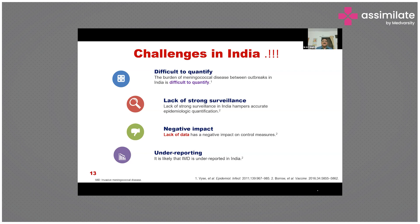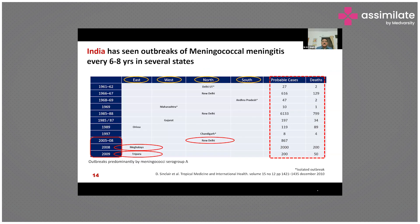As a consequence, IMD is markedly underreported in India. Despite poor surveillance and diagnostic challenges, the disease has shown its presence, necessitating concern for prevention and treatment. Meningococcal outbreaks have occurred every 6 to 8 years in several states — from Delhi starting in 1961, with the last Delhi outbreak in 2005–2008, followed by Meghalaya and Tripura. Probable cases and deaths recorded during these outbreaks are documented.